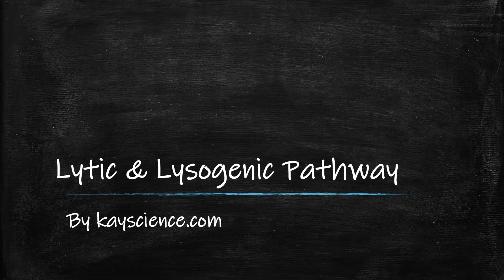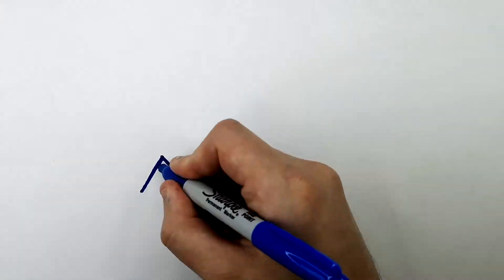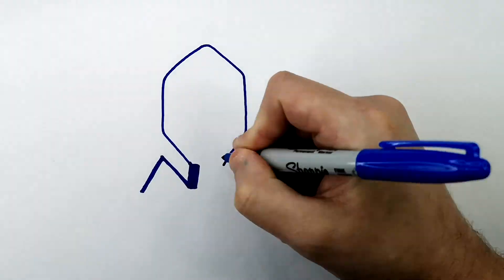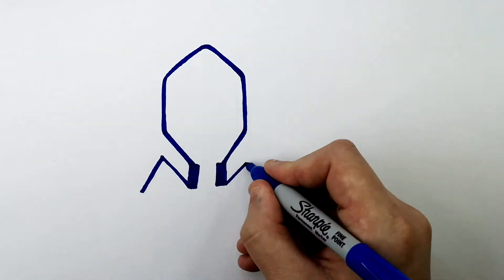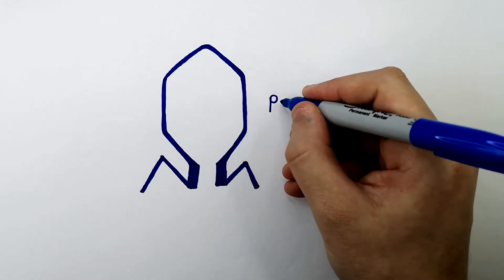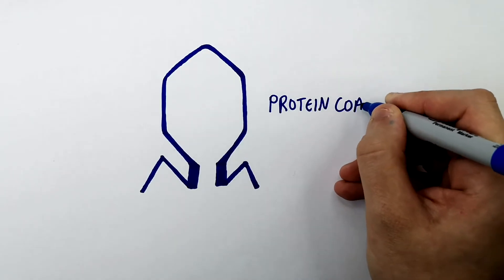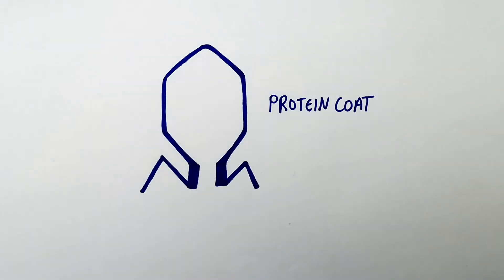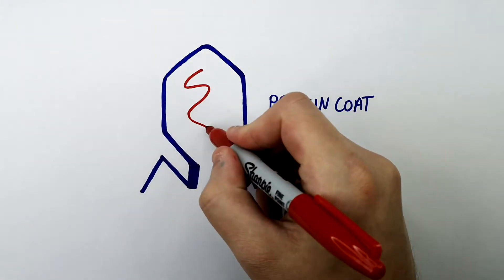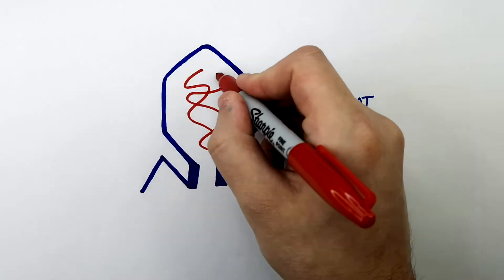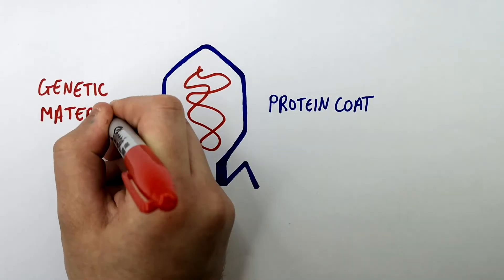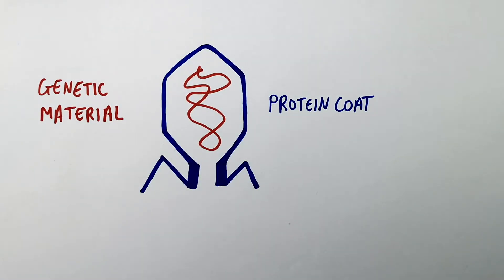The Lytic and Lysogenic Pathway of Viruses by kscience.com. This is what a virus looks like. The blue represents the protein coat of the virus, and this red line represents the genetic material of the virus. This genetic material is used to produce the protein coat when the virus has infected cells.